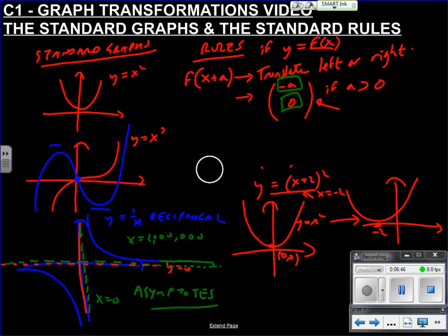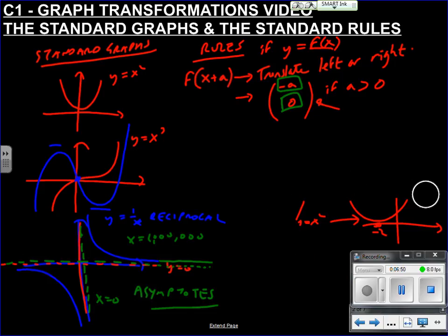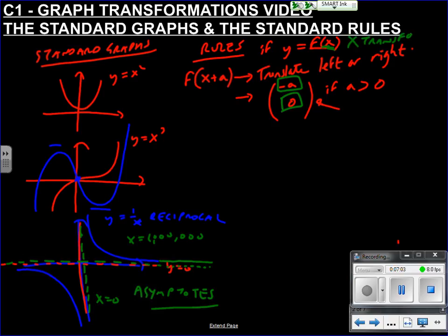So remember, like often, translations or transformations which happen inside the f bracket, so inside here, will correspond to x transformations. So, and they will often do the opposite of what you think they will. So, for example, f of 2x, remember.